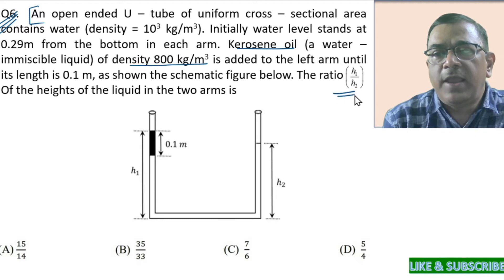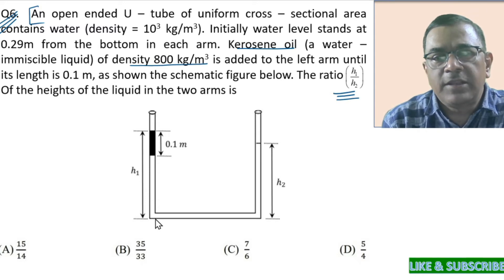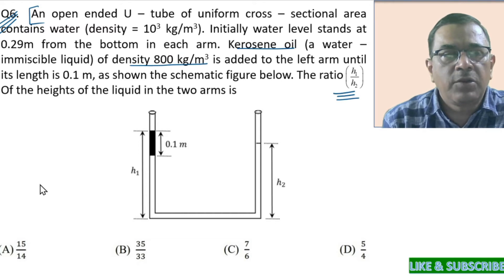And we have been asked to find H1 upon H2. So H1 is the level of the liquid column in the left arm and H2 is the level column in the right arm. Now let's proceed.